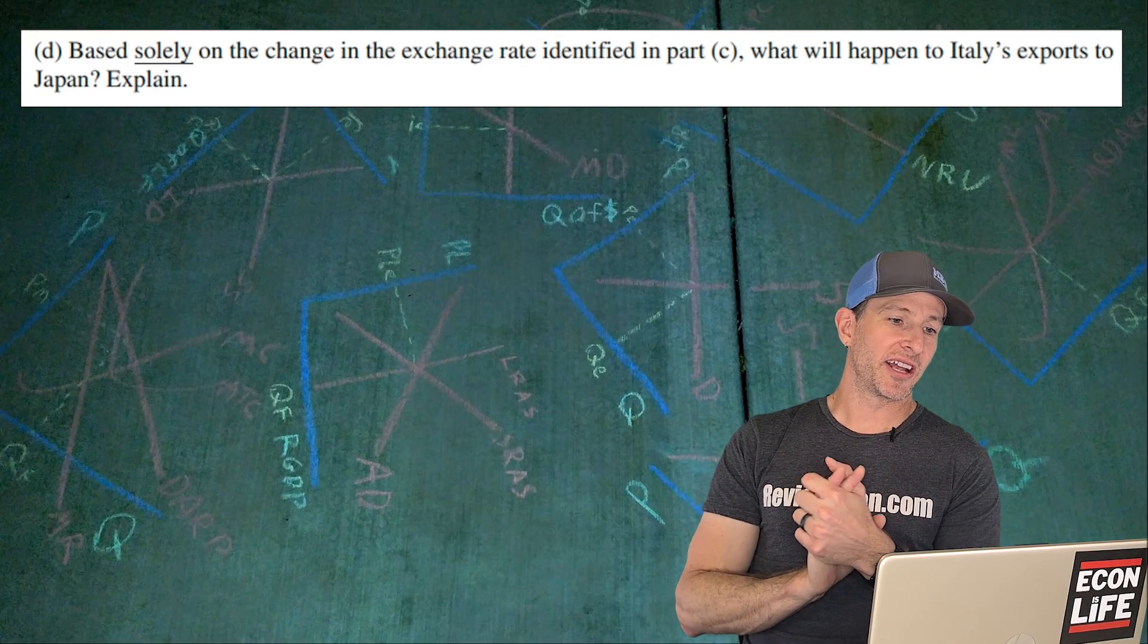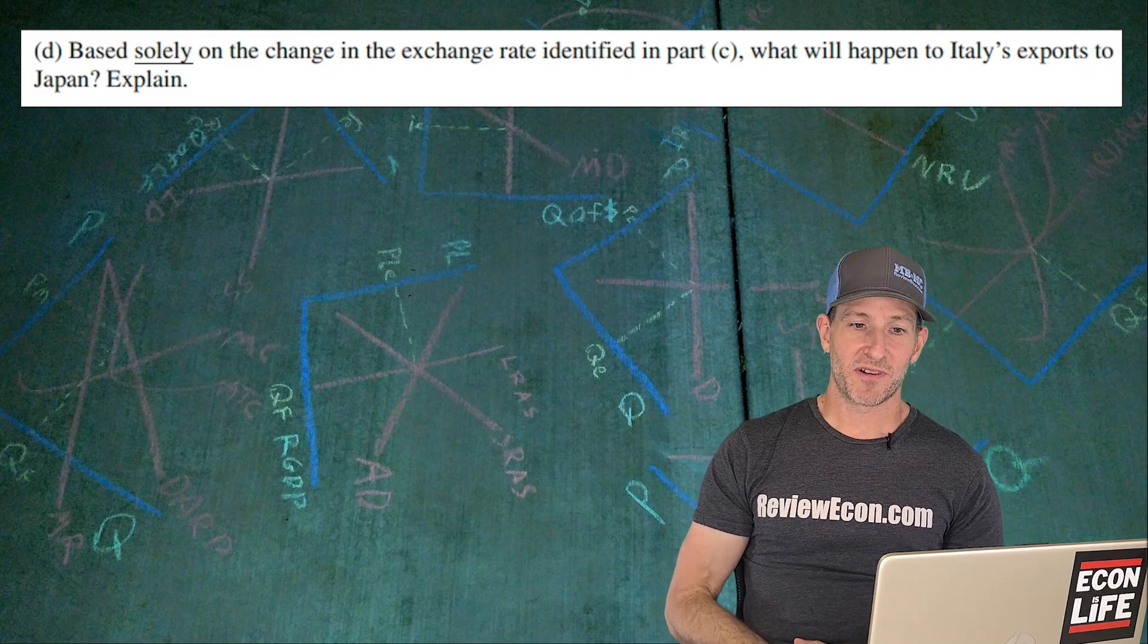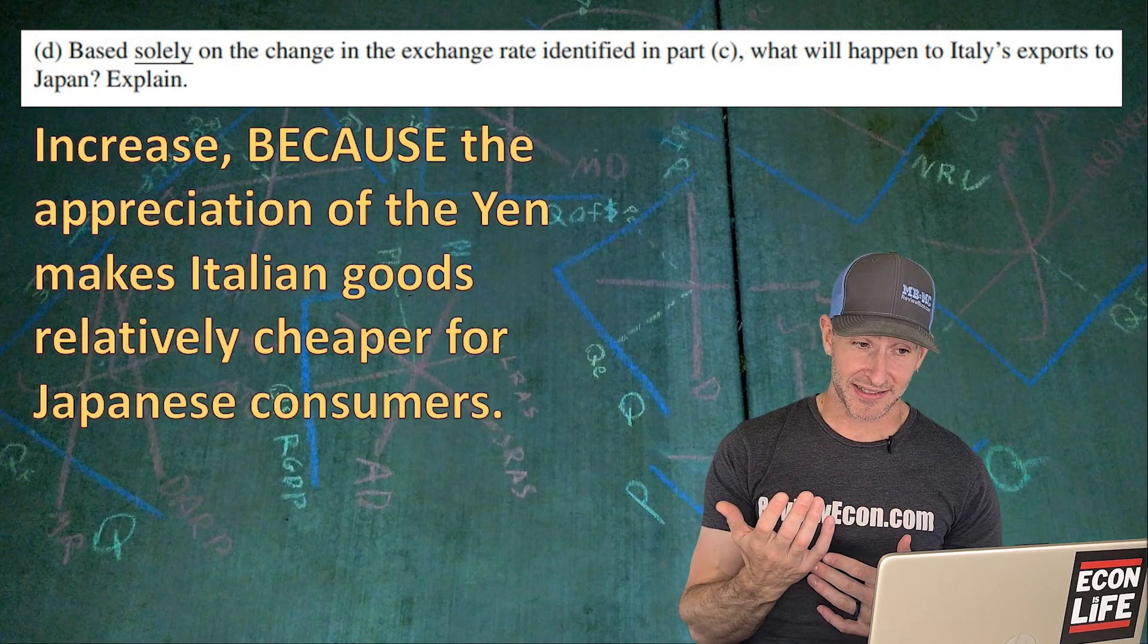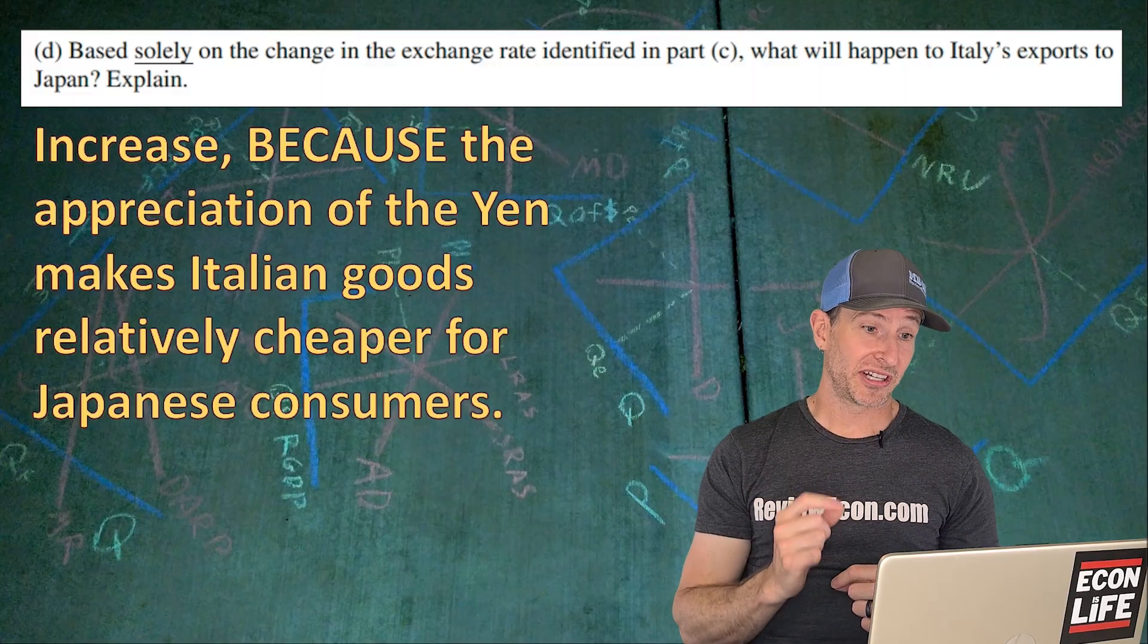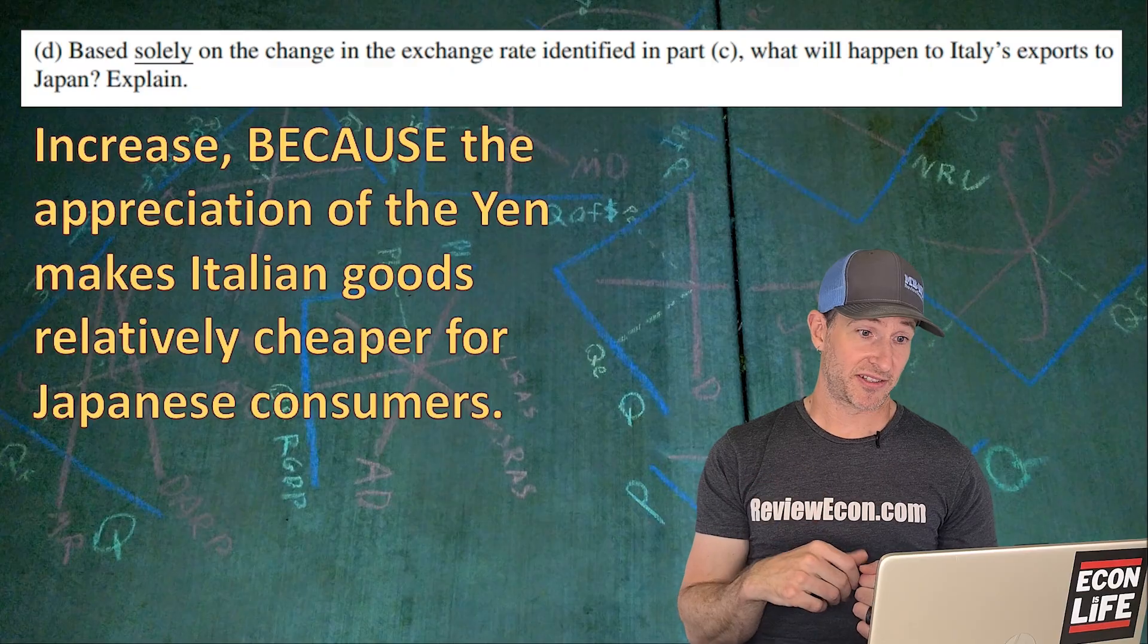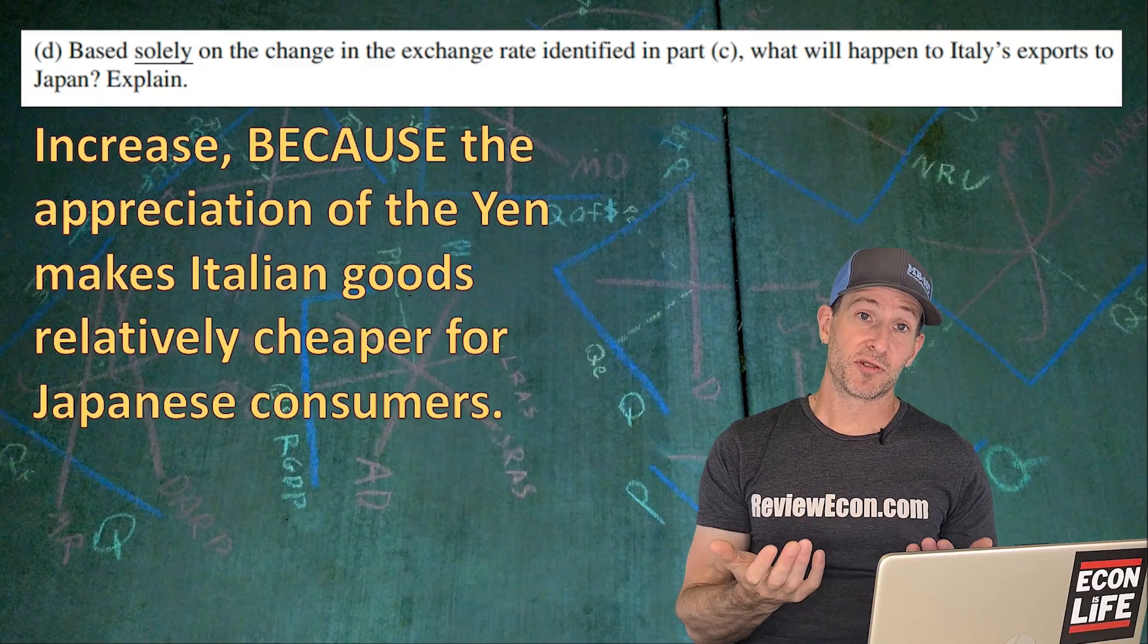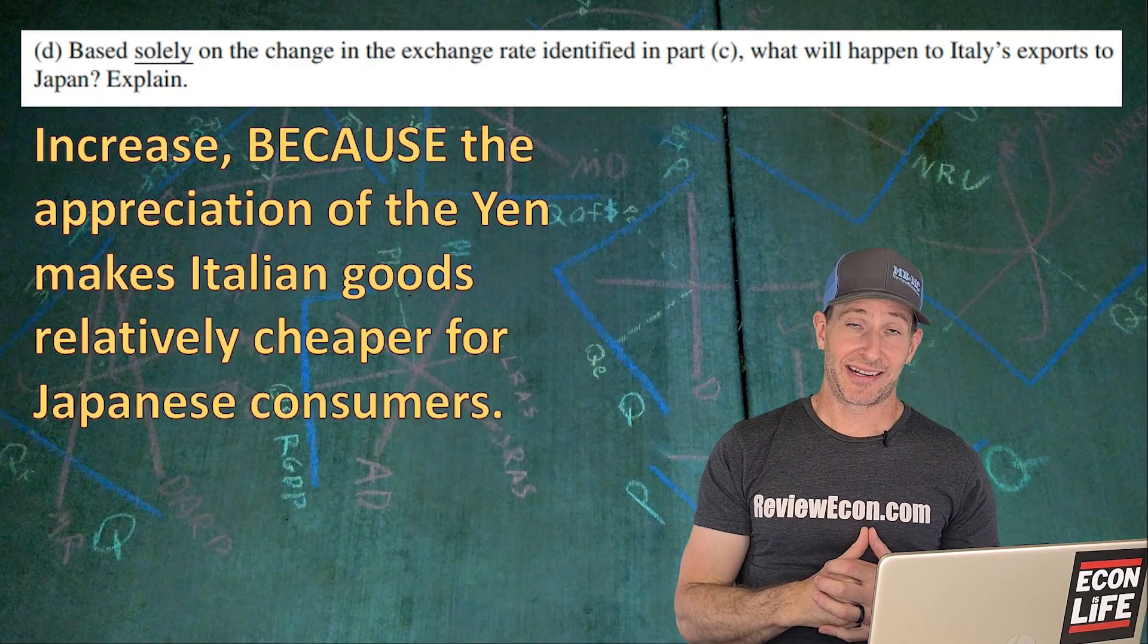Next up we've got D. Based solely on the change in the exchange rate identified in part C, what will happen to Italy's exports to Japan and explain. I say they're going to increase. And that's because the appreciation of the yen makes Italian goods relatively cheaper for Japanese consumers. Exchange rates being, the appreciation makes the yen more valuable and it takes fewer yen as a result in order to buy more Italian goods. So we should see an increase.